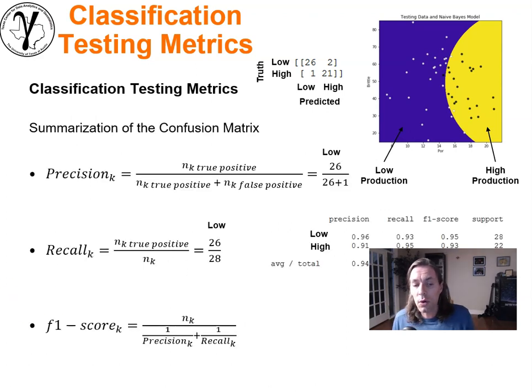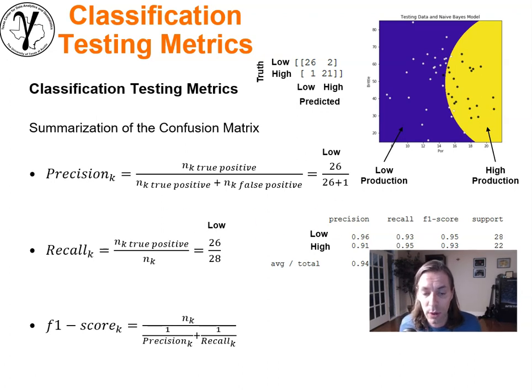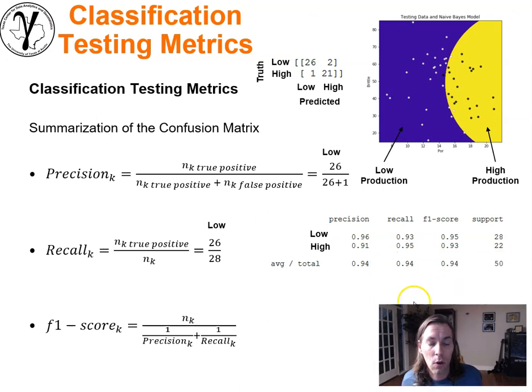There are of course other testing metrics we can work with for classification or categorical response features. We can also use summarizations based on the confusion matrix. Precision is a cool one—this is the number of true positives divided by the total number of positives, the true positives plus the false positives.